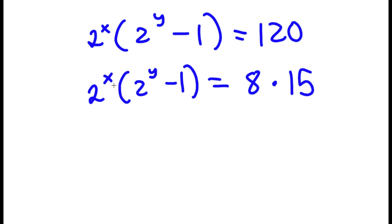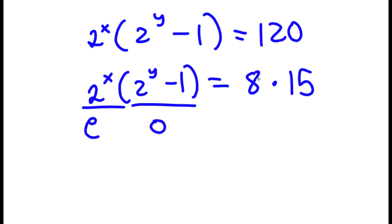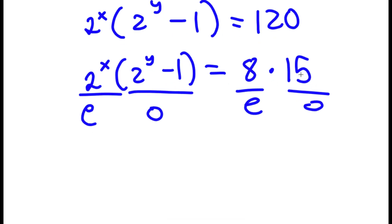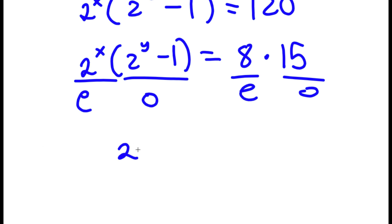Notice that 2 to the power of x results in an even number, since 2 to the power of any number is even. And 2 to the power of y minus 1 — an even number minus 1 — is an odd number. So I have an even number times an odd number equals 8 times 15, where 8 is even and 15 is odd. This means 2 to the power of x equals 8 and 2 to the power of y minus 1 equals 15.